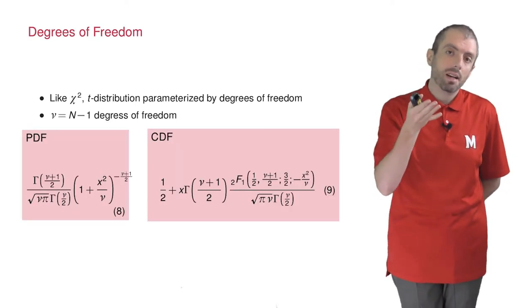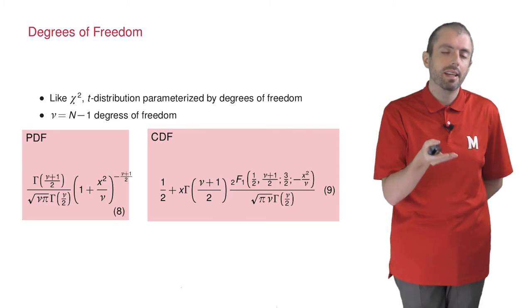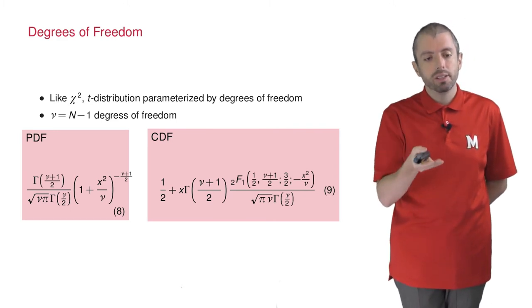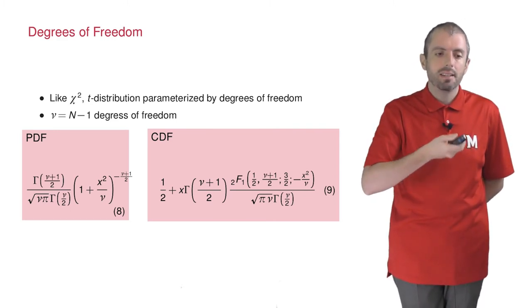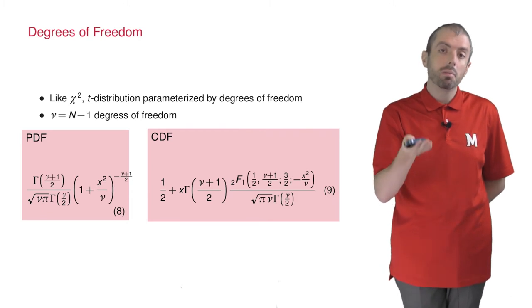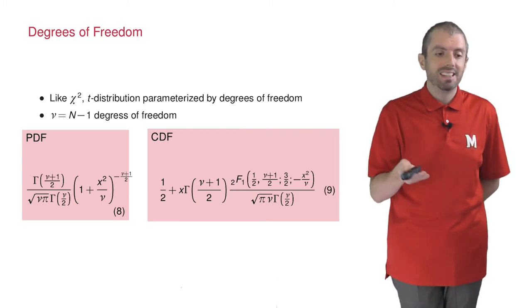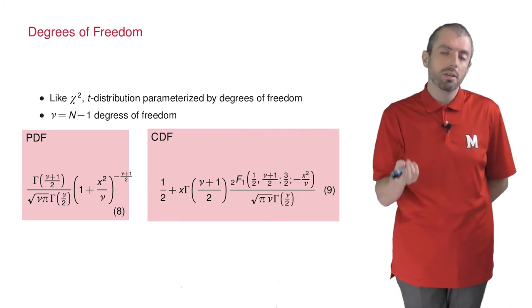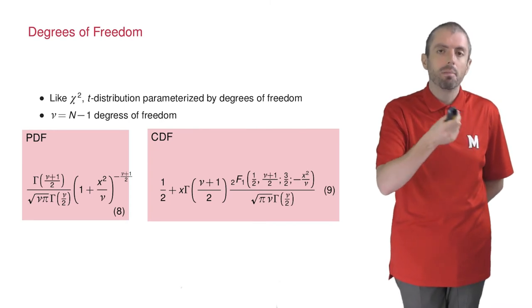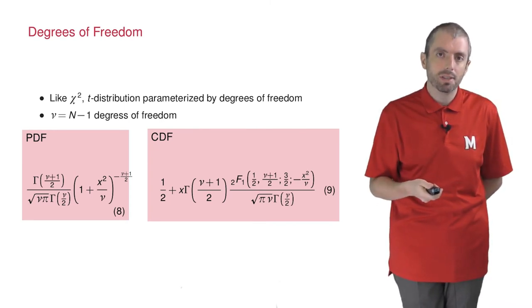What's different about the t-distribution is that it also has degrees of freedom, and the degrees of freedom of a t-distribution is n minus 1. So take the number of samples minus 1, that is the degrees of freedom for your t-distribution.